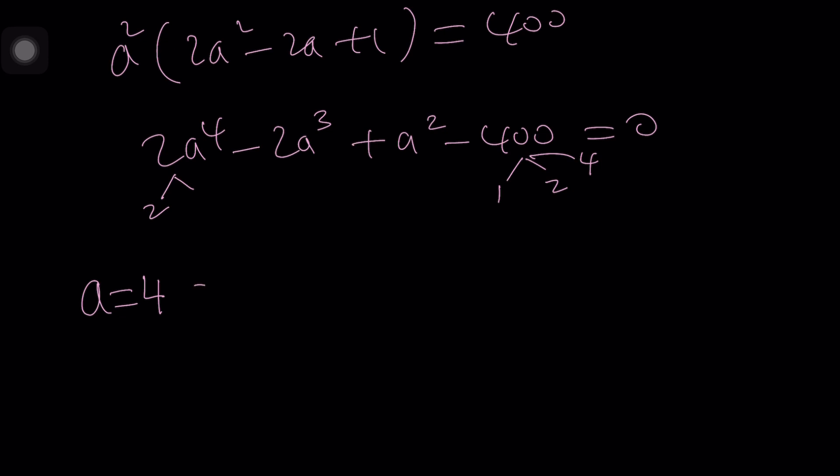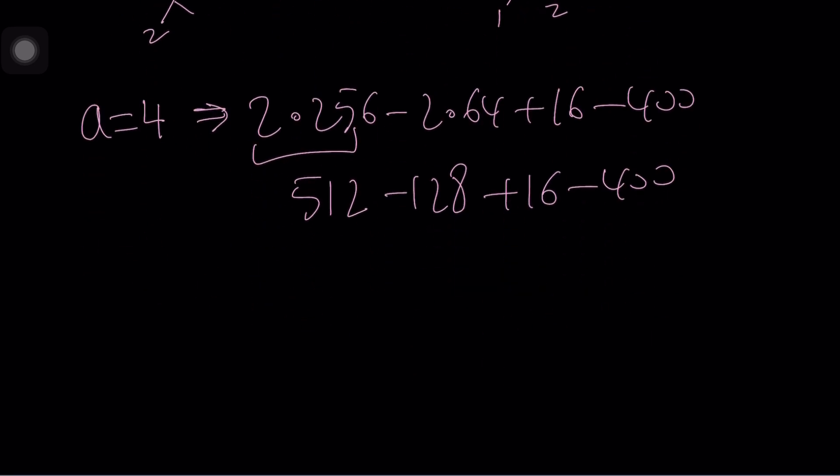But what would happen if a equals four? Let's test it out. If a is equal to four then we get 2(4)⁴ which is 256 minus 2(4)³ which is 64 plus 4² which is 16 minus 400. This is 512 - 128 + 16 - 400. 512 minus 128 is 384 plus 16 is 400 and beautiful, we get zero. Isn't that awesome?